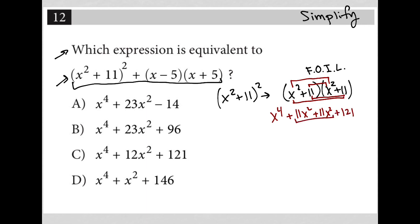So to simplify that, I can combine like terms. And so this all will turn into x to the fourth plus 22x squared plus 121. Now, of course, I'm not finished because that was just this portion of the expression.